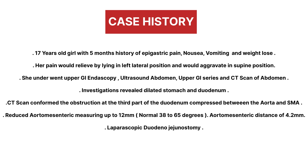She underwent extensive investigations including upper GI endoscopy, ultrasound, CT scan of the abdomen, and upper GI series. The investigations revealed grossly dilated stomach and dilated first and second parts of the duodenum. CT scan confirmed this to be a case of superior mesenteric artery syndrome, as the aortomesenteric angle was reduced to 12 mm compared to the normal range of 35 to 65 degrees. Also, the aortomesenteric distance was only 4.2 mm.